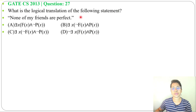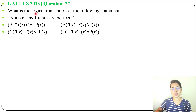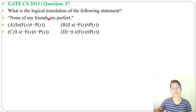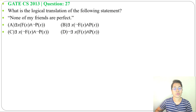Let's solve one previous question of mathematical logic. This question was asked in GATE C.S. 2013, question number 27. What is the logical translation of the following statement? None of my friends are perfect — and four options are given.